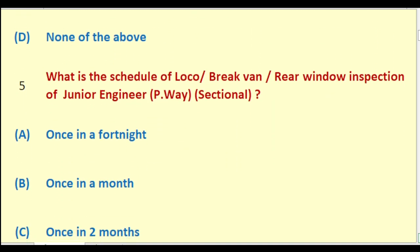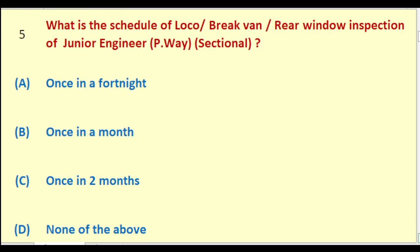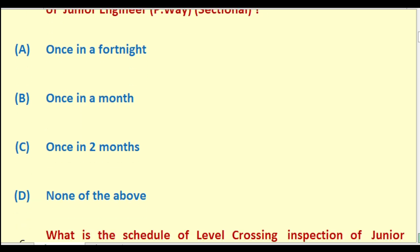What is the schedule of loco/brake van rear window inspection of Junior Engineer Permanent Way Sectional? Options: once in a fortnight; once in a month; once in two months; none of the above. The right answer is: once in a month.